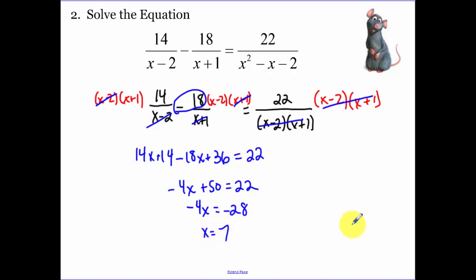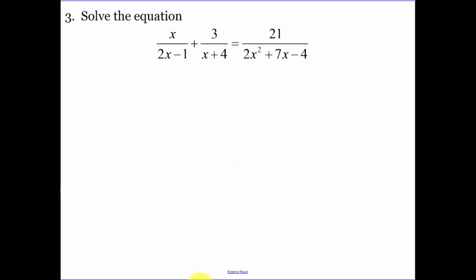Something that I forgot to do on the last problem: make sure that this number doesn't make any of these denominators 0. The numbers that make those denominators 0 would be our extraneous solutions, and we wouldn't include those in our solutions.